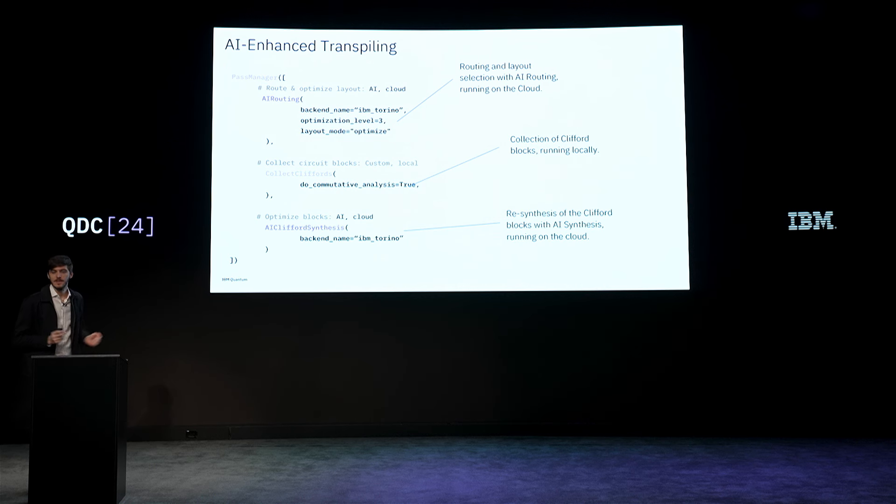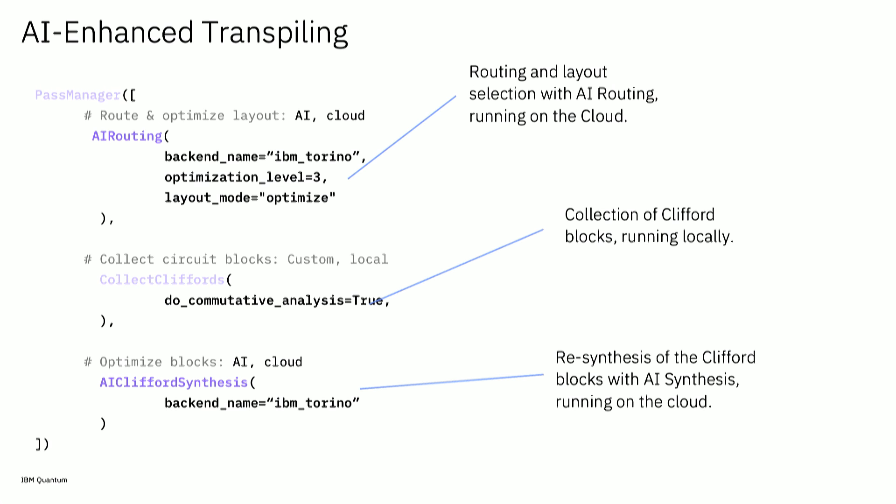This is more or less how it works. You can ask me more in the break, or take a look at the paper if you are more interested in how we train this. But now I'm going to go into how you can actually use this. Typically, this is a very limited transpilation pipeline. We will see more how you can integrate it into the full pass manager in Qiskit in the second talk. But this is a minimal example of how you can use these passes.